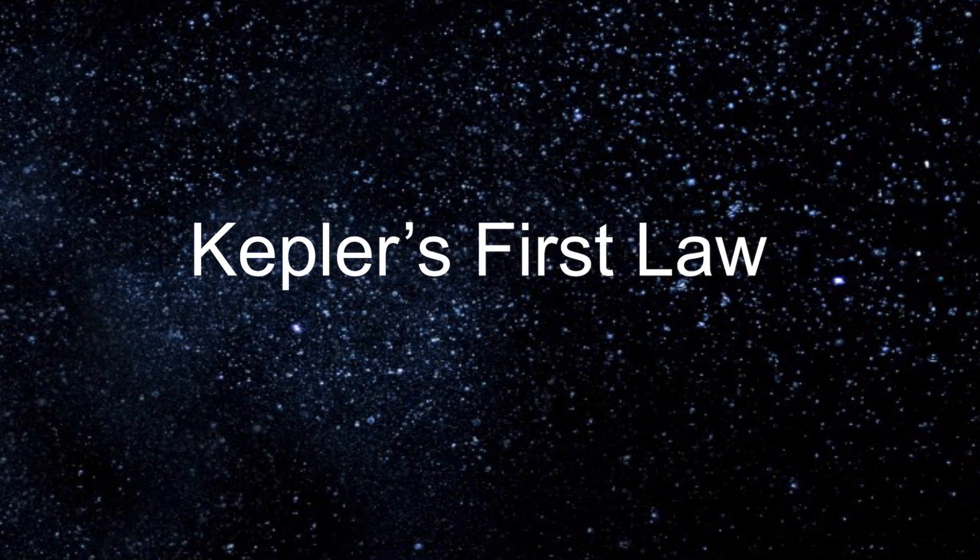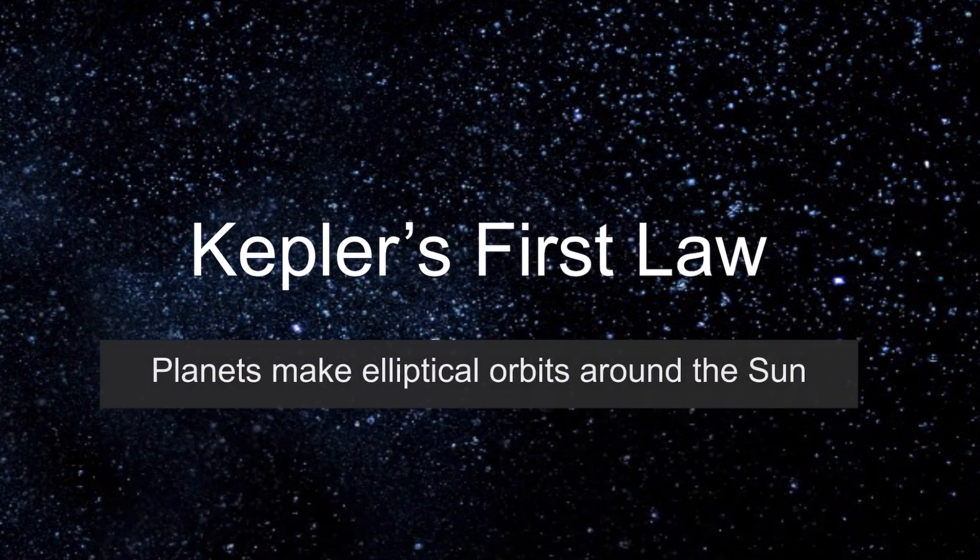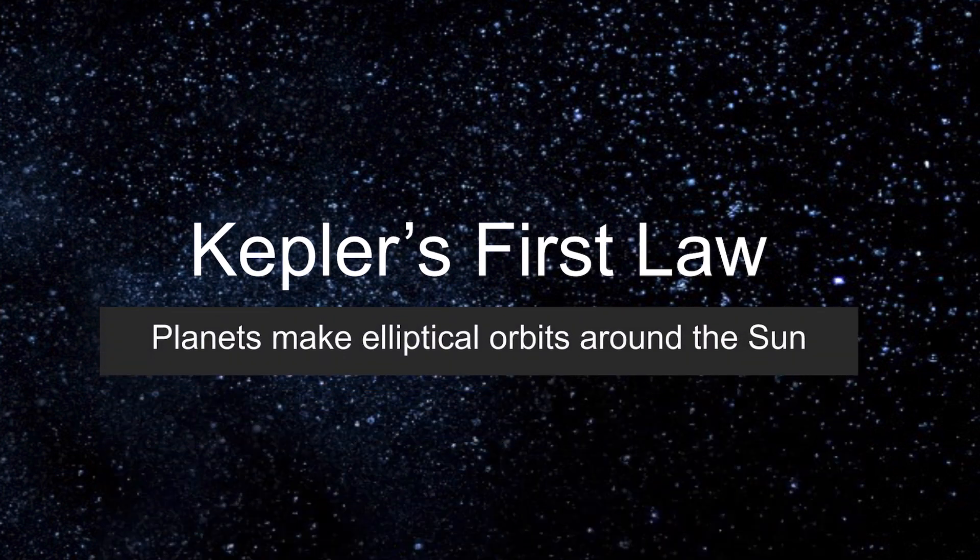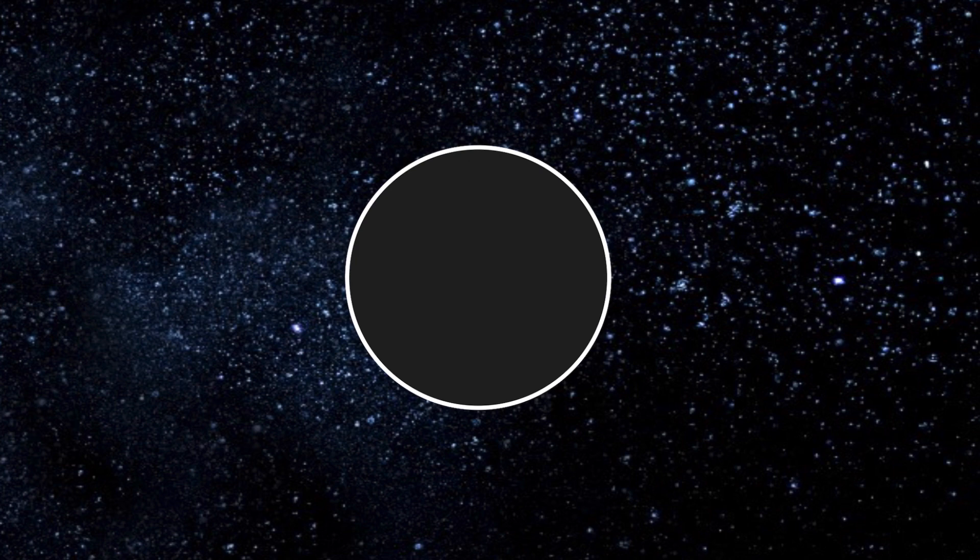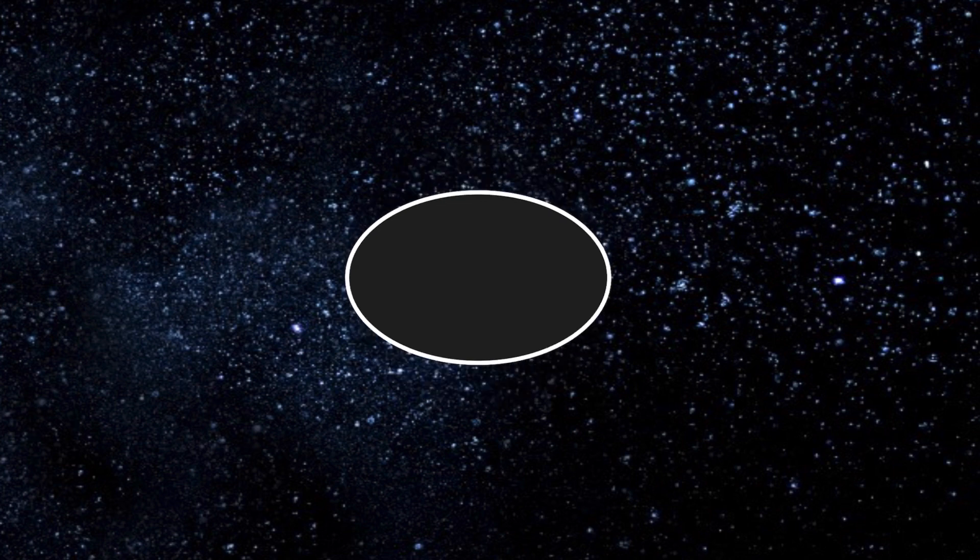Kepler's first law of planetary motion says that planets orbit the Sun in a path that forms an ellipse. An ellipse is a special shape that looks like a circle, however, is slightly squashed.